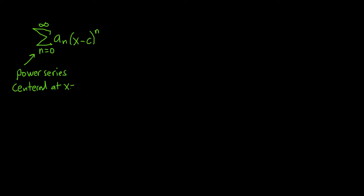So c is called the center of the power series. If you plug in zero, you get a sub zero, and then you get x minus c to the zero, which is one — so we don't write it. Plus, if you plug in one, you get a sub one times x minus c to the one. Plug in two, you get a sub two times x minus c squared, and so on.